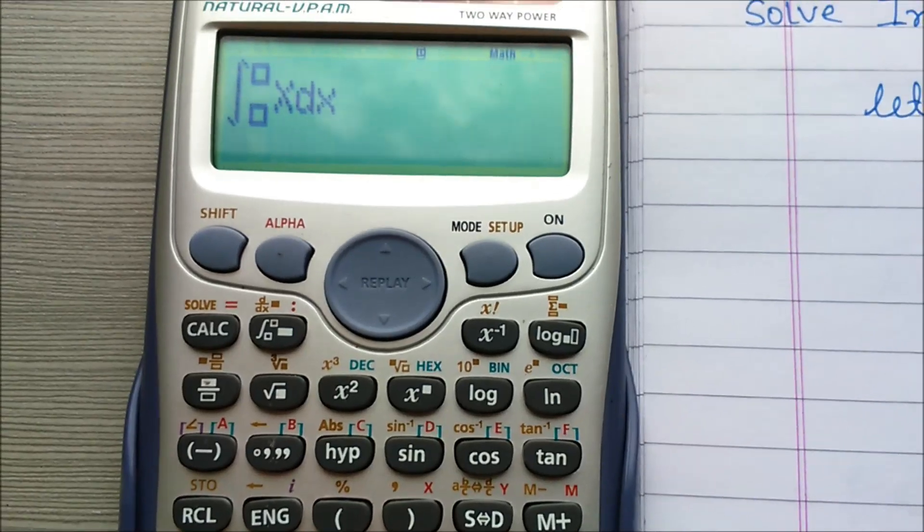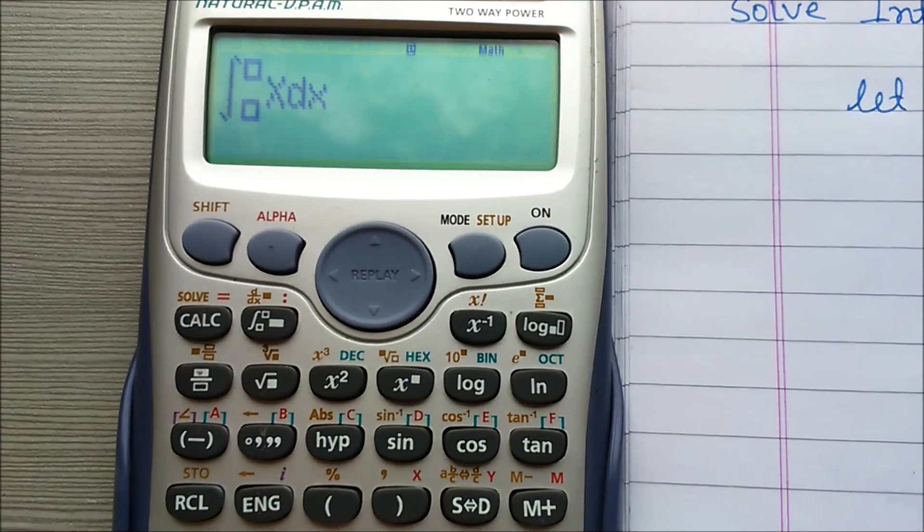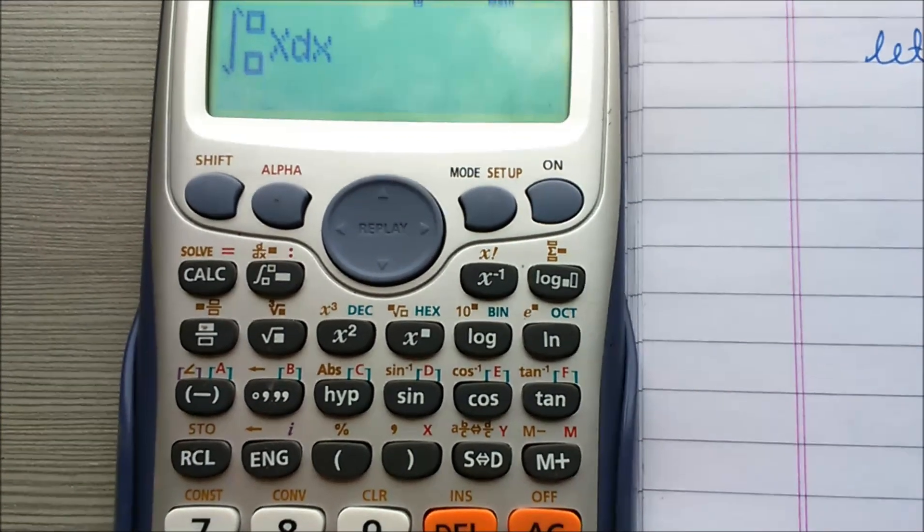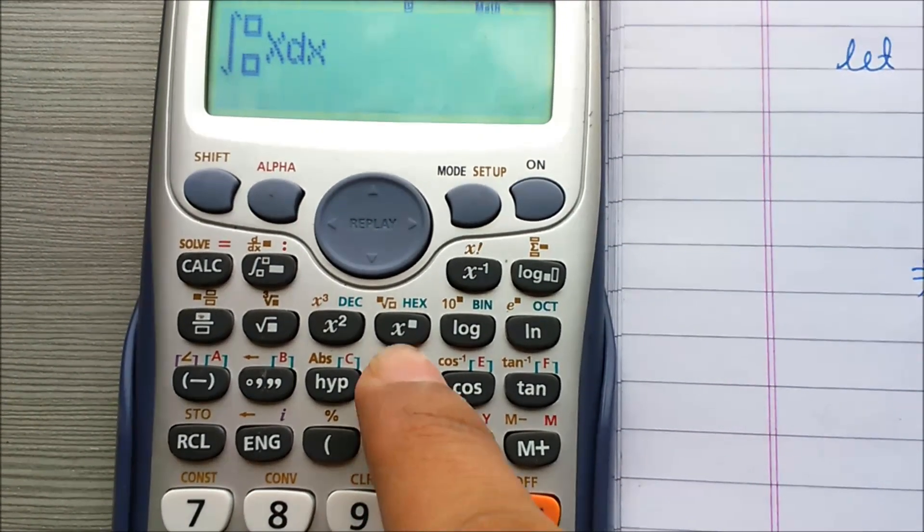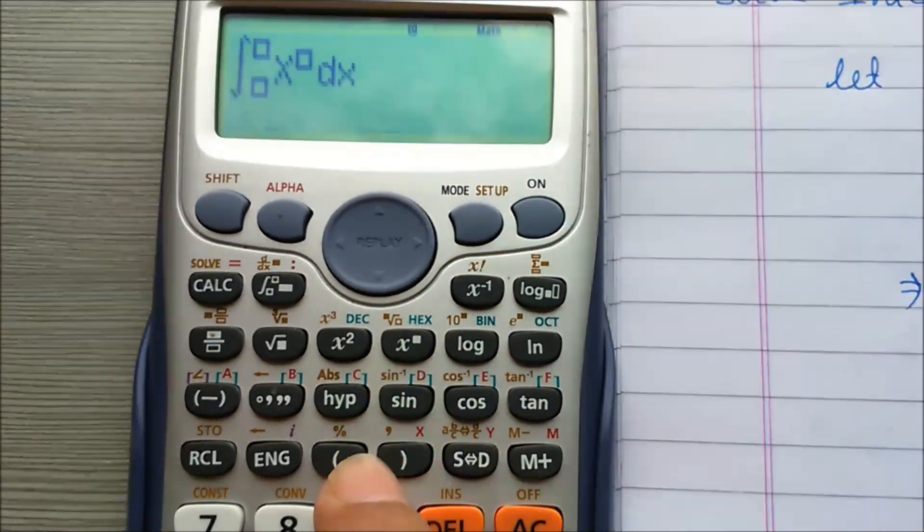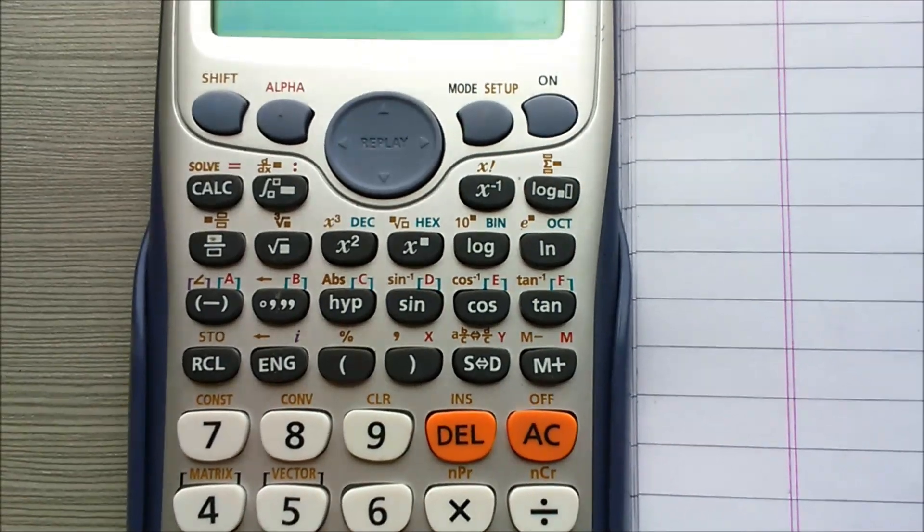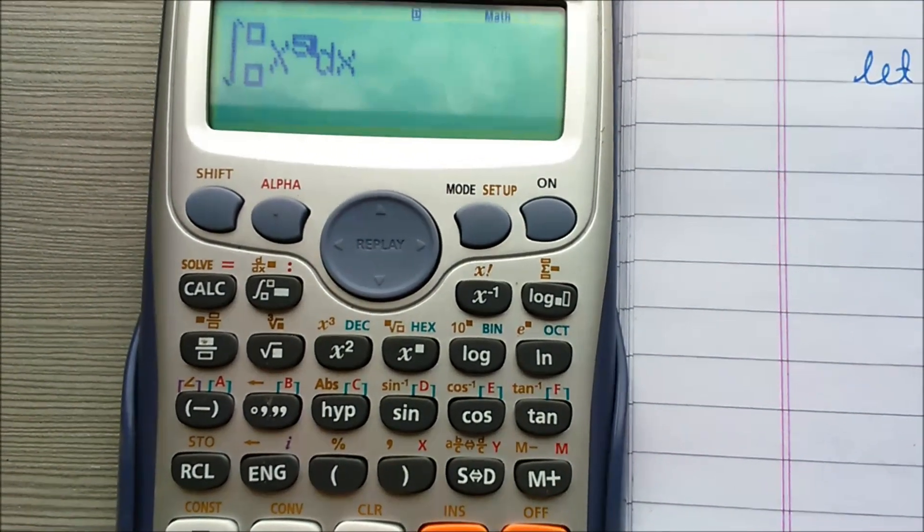You see x is displayed here. Now for x to the power 5, press this button. Now type 5. You will see x to the power 5.